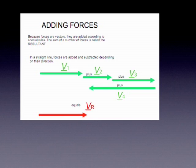In a straight line, they're added and subtracted depending on their direction. We show their direction using a plus or a minus, or in this case, in the diagram. So we've got V1 plus V2 plus V3 all to the right. V4 is a force in the other direction to the left. And we're adding them by a method which we call nose to tail.